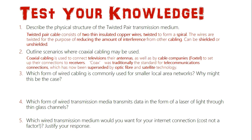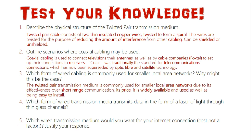Question three: which form of wired cabling is commonly used for smaller local area networks, and why? We're talking about a smaller local area network set up within a business or small environment using wired transmission. In that case, twisted pair transmission is the most commonly used. It's used in small local area networks due to its effectiveness for short-range communication — it has good speeds over short distances, though speed decreases as cable length increases. Its price point also makes it attractive; it's a cheap option and easy to set up.